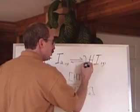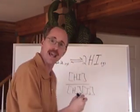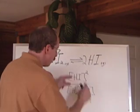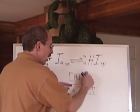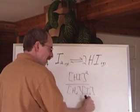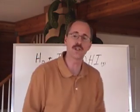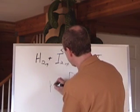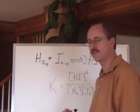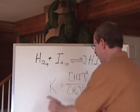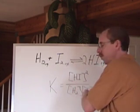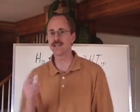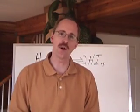And so we take the 2, the coefficient in front of any chemical, and we make it the power to which that concentration is taken. The concentration of the HI squared divided by the concentration of H2 and I2 at a certain temperature will always give us a constant. And this is how we write constant. Because we like to write it in German, we write the constant K. K equals the concentration of HI squared over H2 times I2.